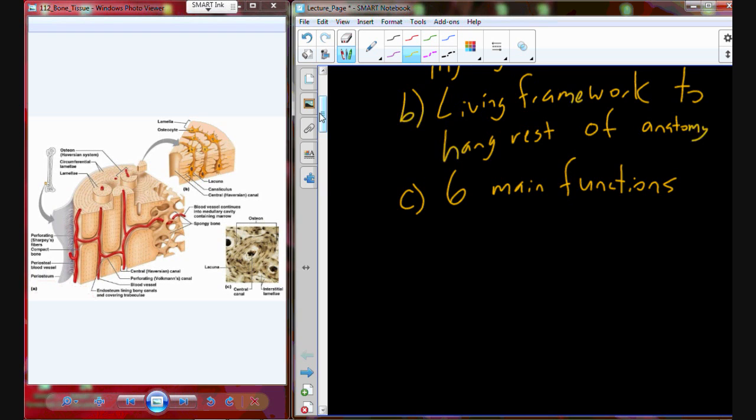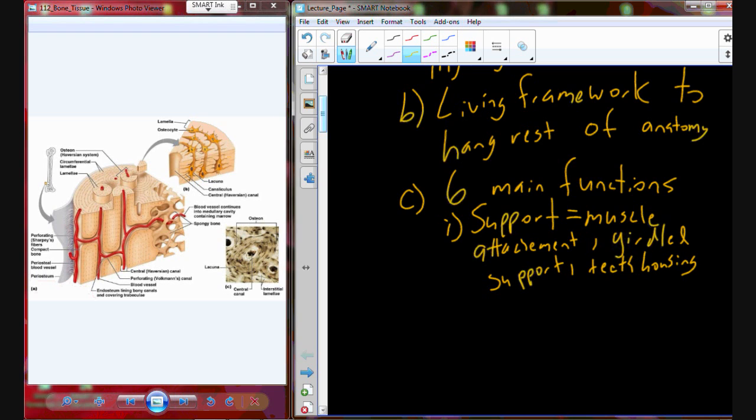The skeletal system provides humans with six main functions. Function number one is support. This provides muscle attachment and girdled support for the limbs, the upper and lower limbs, and also houses the teeth.